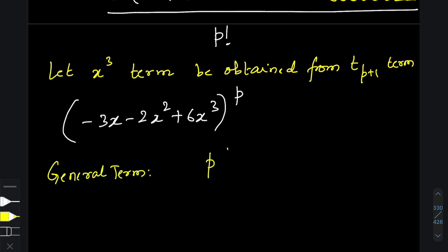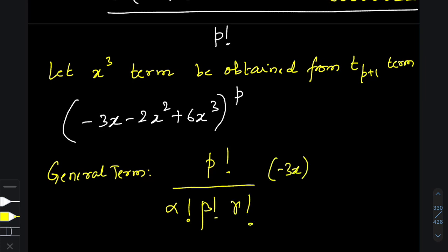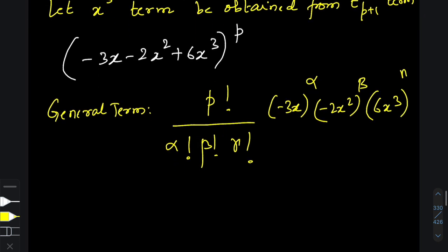The general term for this multinomial expression is given by: p! over (α! β! γ!) times (−3x)^α times (−2x²)^β times (6x³)^γ. Now, this is the general term that will give me x³.